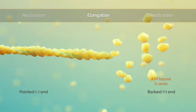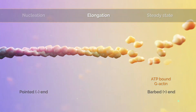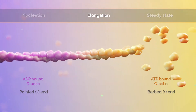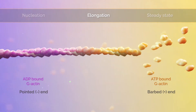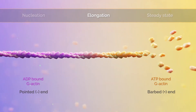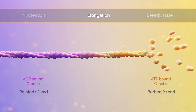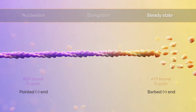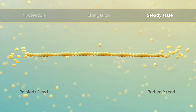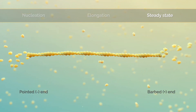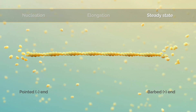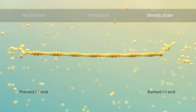Bound G actin monomers undergo ATP hydrolysis, producing an increase of ADP-bound G actins at the pointed end of the filament. These G actins disassociate more readily than the ATP-bound G actins at the barbed end. Thus actin filaments undergo treadmilling as the reaction reaches a steady state, with G actin monomers constantly added to the barbed end and removed from the pointed end.